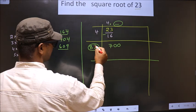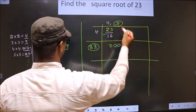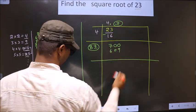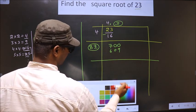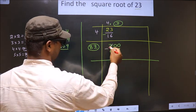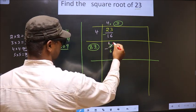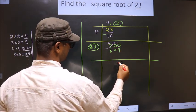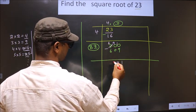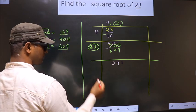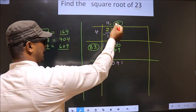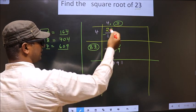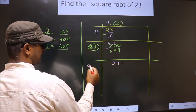So 609. Subtract: 700 minus 609 — 10 minus 9 is 1, 9 minus 0 is 9, 6 minus 6 is 0. Remainder is 91. Now here we should add these two numbers and write: 87 plus 7 is 94.